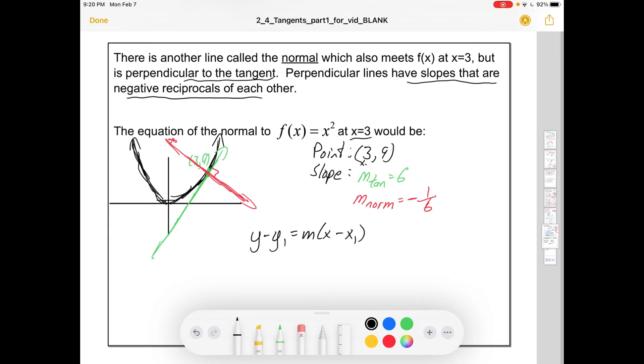So y minus 9 equals negative 1 sixth times x minus 3. So that'll give us negative 1 sixth x plus 3 over 6, so plus a half. And there are a variety of ways that you can write this. You can add 9 to both sides. So plus 9 and a half. Not a lot of mixed numbers in higher mathematics. So maybe you want to call that 19 over 2. Or maybe you want to call it 9.5. Any of these are okay. The mixed numbers are a little unusual though.